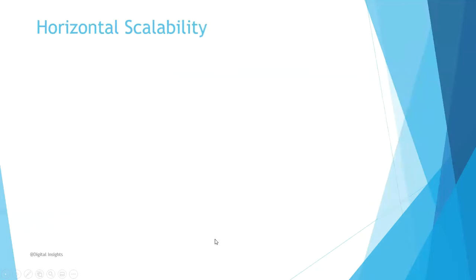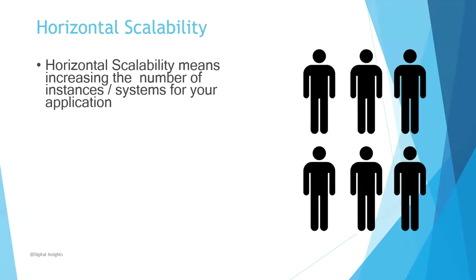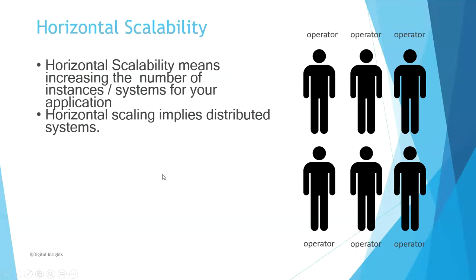Now let's talk about horizontal scaling. Horizontal scaling means increasing the number of instances or systems for your application. Here what we will do, we have a single operator. Now we can bring in more operators to handle the flow of the calls, or in our case we can spin up more instances to cover the load on the system.